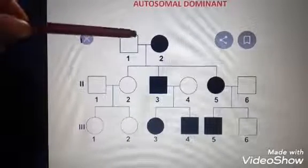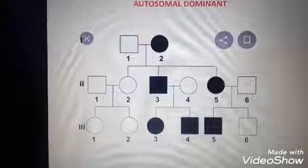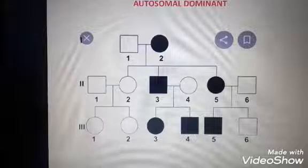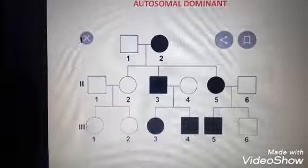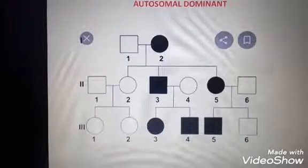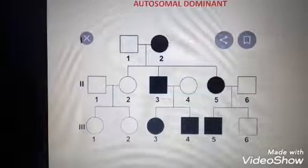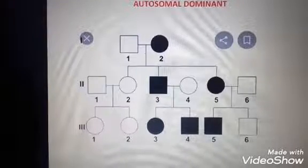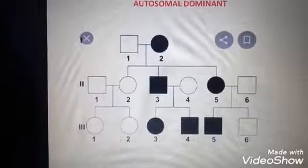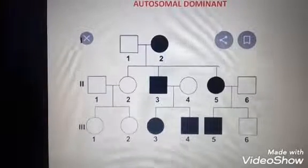Here, mating occurs between a male and a female who have 6 children. Both the male and female children get affected. The mother can give only the X chromosome and the father can give the Y chromosome. The fact that both male and female get affected clearly indicates that the defective dominant trait can be achieved from the mother.